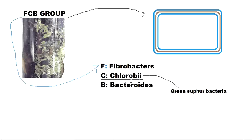Green sulfur bacteria use substances such as hydrogen sulfide and ferrous sulfide, and then they evolve elemental sulfur. They can further oxidize it to various degrees, like SO₂ and SO₃. Chlorobi contains one genus, which is Chlorobium.